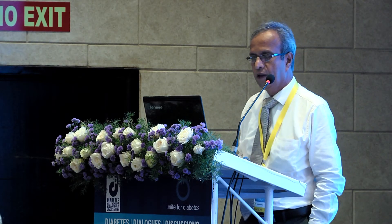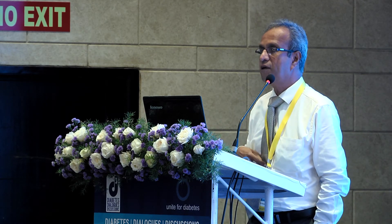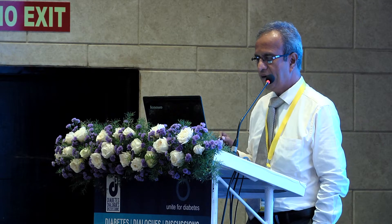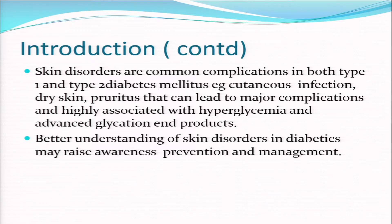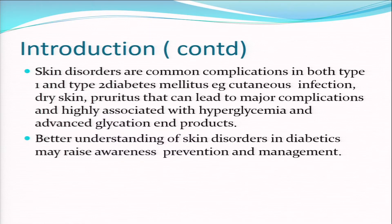Cutaneous signs of diabetes mellitus are extremely valuable to clinicians. They may appear after the primary disease has developed, or may signal onset and precede diabetes by many years. Skin disorders are common complications in both type 1 and type 2 diabetes mellitus. Commonly we face cutaneous infections, dry skin, and pruritus, which can lead to major complications highly associated with hyperglycemia and advanced glycation end products.